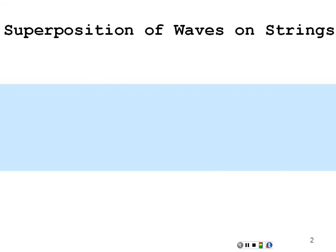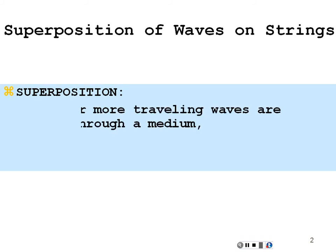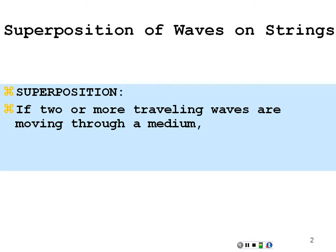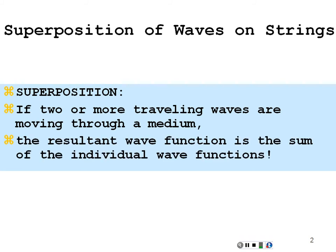We start with the principle of superposition. In physics, superposition is very important when we think about the individual characteristics of several things that can be brought together and combined into a net effect. In the case of superposition of waves on strings, we start with two or more traveling waves on the same string. The resultant wave function is the sum of the individual wave functions.